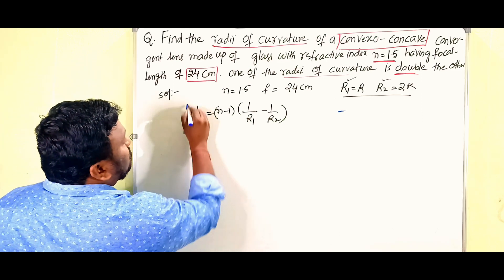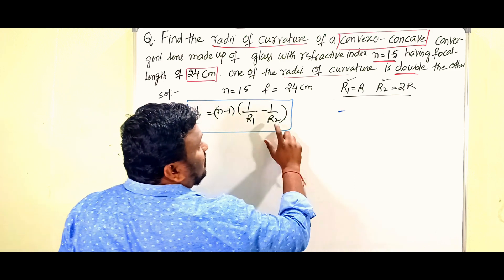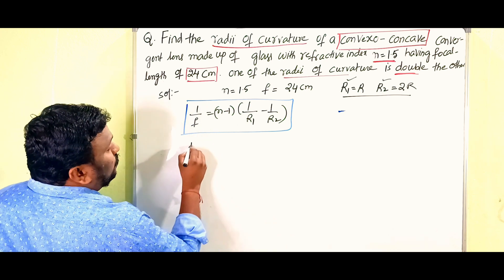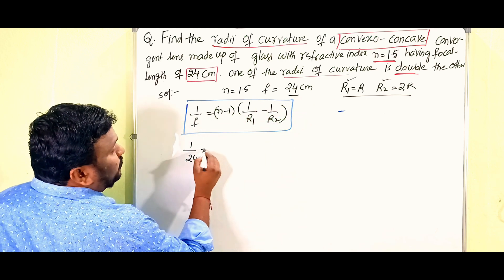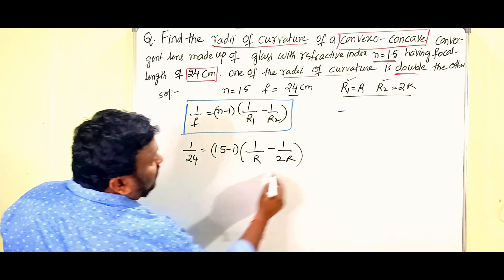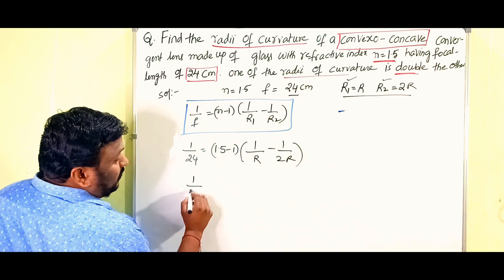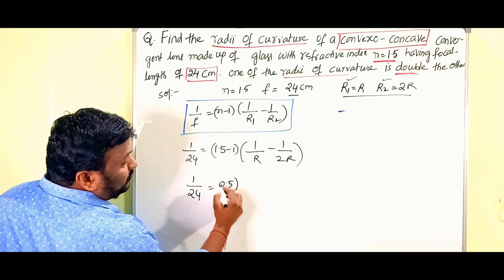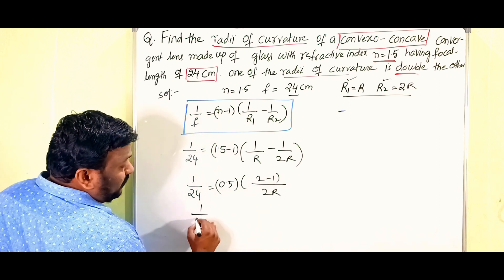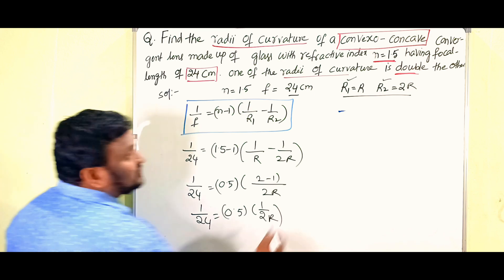In the lens maker's formula, f is the focal length, n is the refractive index, r1 is the radius of curvature of the convex surface, and r2 is the radius of curvature of the concave surface. Substituting values: 1/24 = (1.5 − 1)(1/r − 1/2r) = 0.5 × (2−1)/2r = 0.5 × 1/2r. So 1/24 = 0.5/2r, which simplifies to 1/12 = 0.5/r.